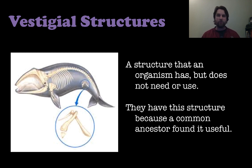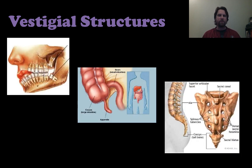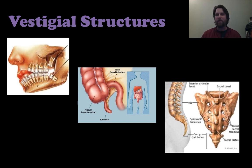Going back to vestigial structures — these are structures an organism has but doesn't need or use anymore, left over from a common ancestor that found them useful. Humans have several vestigial structures: wisdom teeth that very few people have room for, the appendix which doesn't do much and is often removed when inflamed, and the tailbone — a remnant of an actual tail that serves no real purpose, possibly evidence of a common ancestor that had a tail.